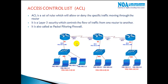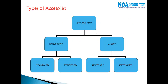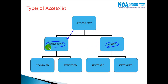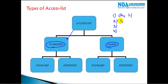Now let's understand the different types of ACLs. We have two kinds: named ACLs and numbered ACLs. The major difference between these two is that they are essentially the same, but the rules you write — for example, deny 1.1, deny 1.2, deny 3.0 network, permit all remaining — can be identified either by a name or a number.